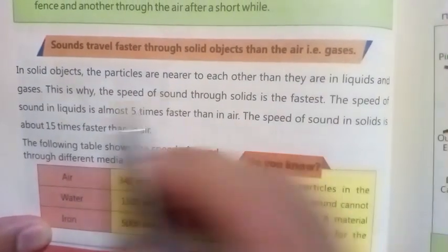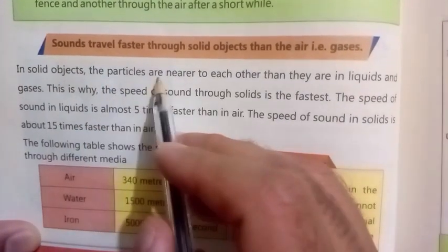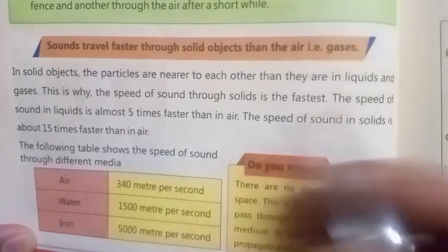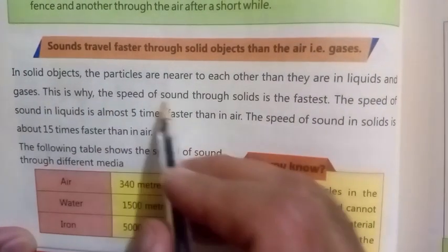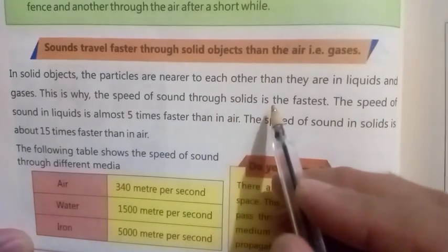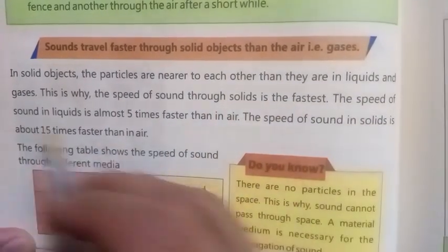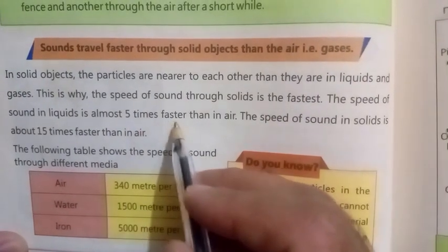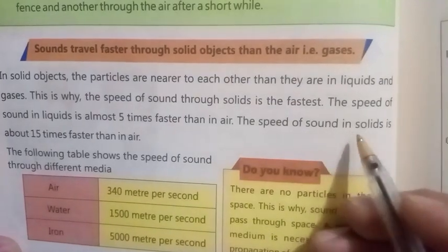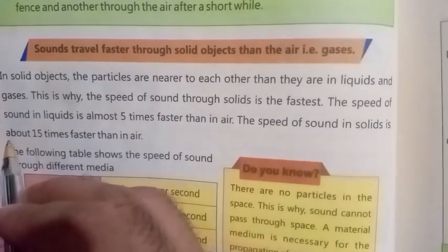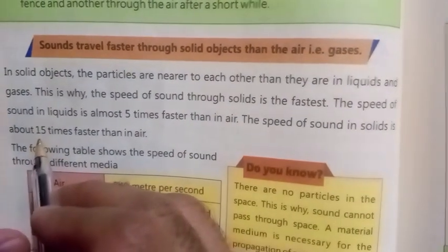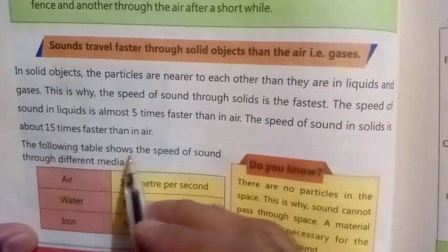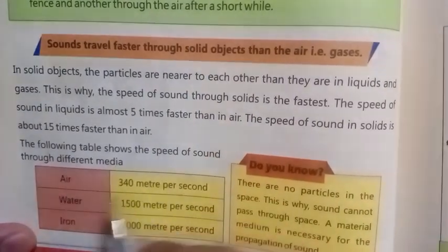Sounds travel faster through solid objects than through air. In solid objects, the particles are nearer to each other than they are in liquids and gases. This is why the speed of sound through solids is the fastest. The speed of sound in liquids is almost five times faster than in air. The speed of sound in solids is about 15 times faster than in air.